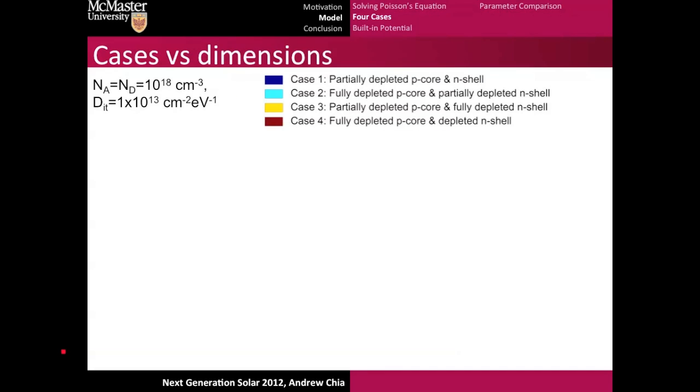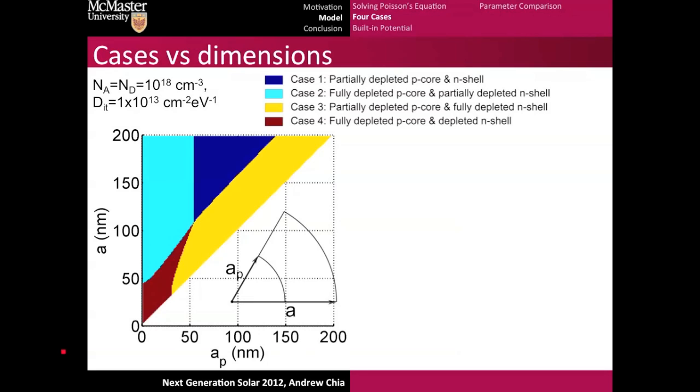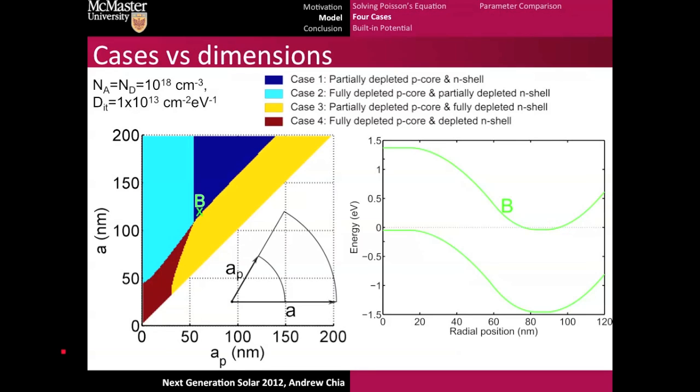What we want to do is let's pick a typical doping density of 10 to the 18, and we can basically plot out the same type of graph, except instead of plotting with the dopings on each of the axes, we can plot with AP, which is the core radius, and A, which is the total radius. We can see a few things. Let's pick out a few points to understand what this plot is showing us. If we took this point here, which has a total radius of 120 nanometers and an AP of 60, we'd get case one. Here you can see that clearly because you see the quasi-neutral regions.